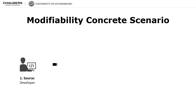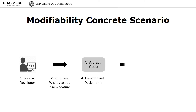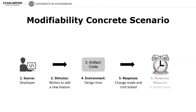The figure on the slide illustrates a concrete modifiability scenario. A developer wishes to make a change to a system feature, as requested by the product owner. The developer modifies the source code at design time. This is a typical example of perfective maintenance in agile development. The modifications should be made with no side effects within three hours.